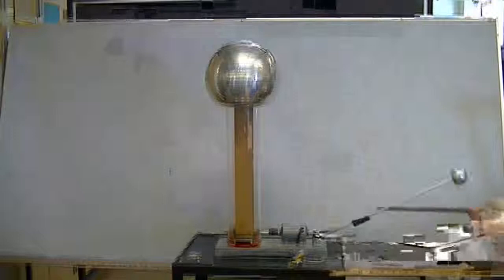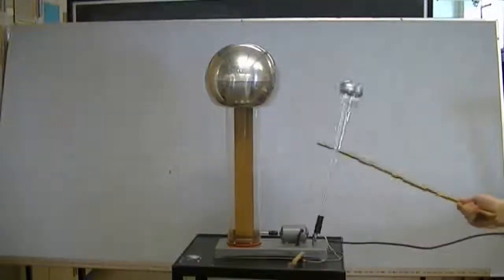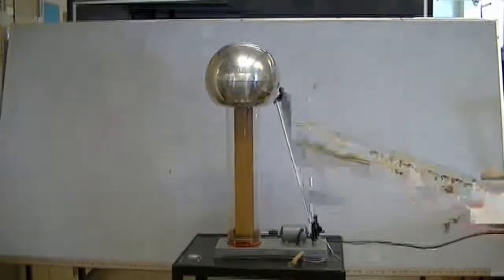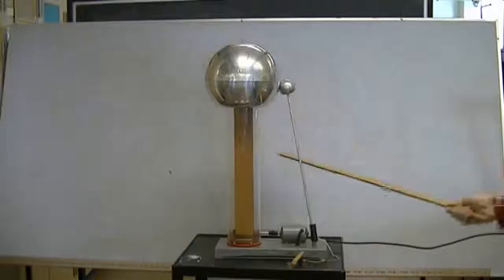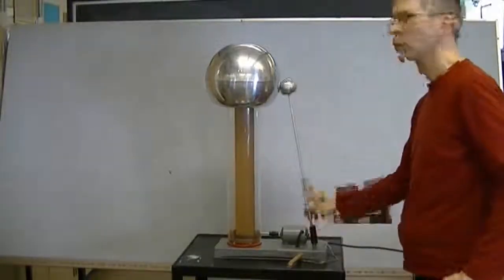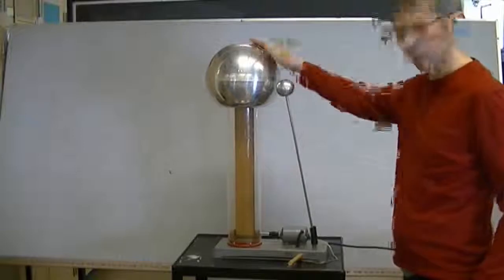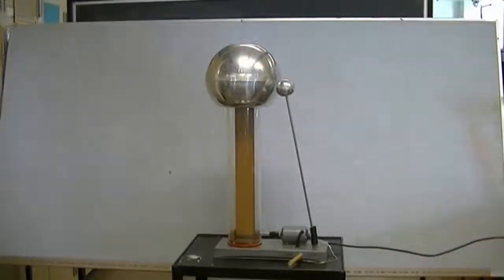I made contact between the large sphere and the small sphere, and what that does is the charge on the large sphere goes to ground through the rod, and it's safe to touch the large sphere again.